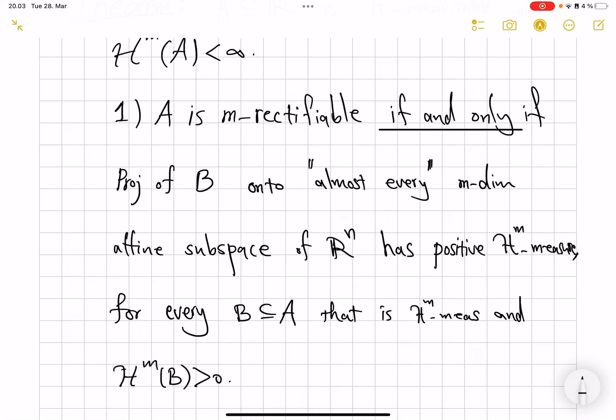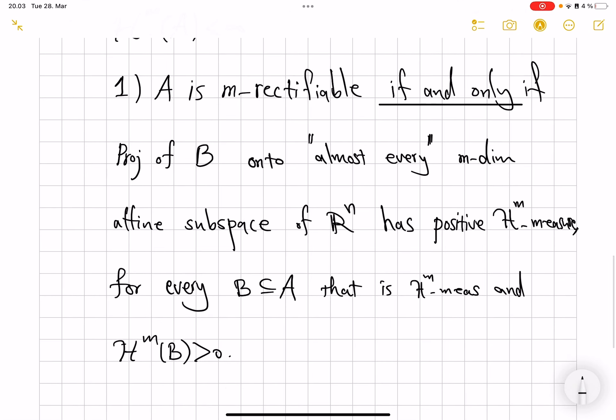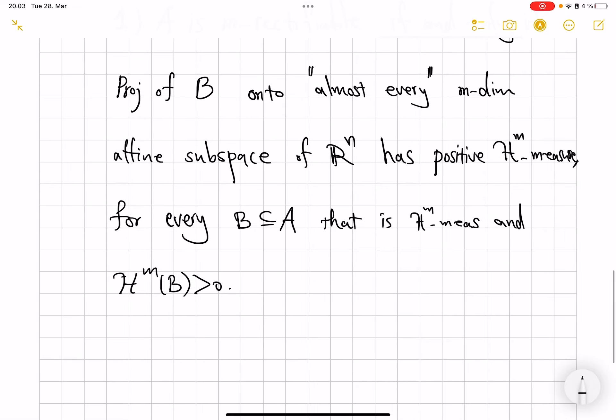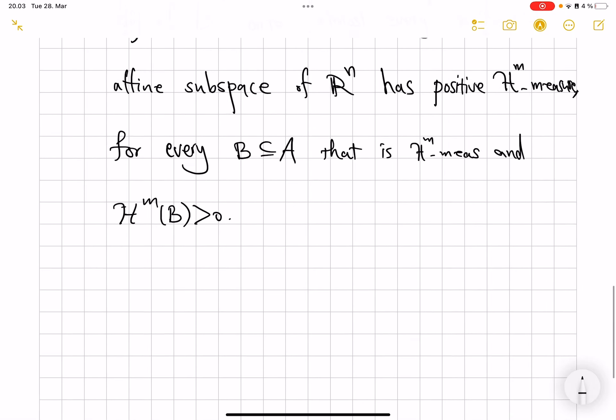And H^m of B is positive. Of course, you can take one point and this will not be true. So if you take any subset of A with positive measure, A itself also included, then its projection onto affine subspaces will have positive measure.